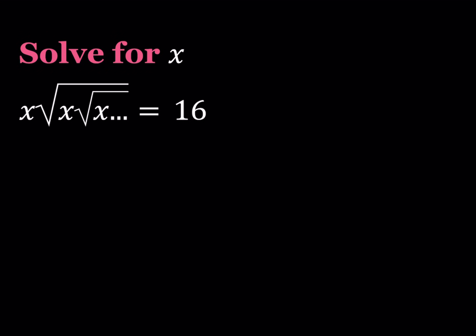Hello everyone. In this video we're going to be solving a radical equation that goes on forever. So we have x times the square root of x times the square root of x times the square root of x, so on and so forth. And the whole thing is equal to 16 and we're going to be solving for x.